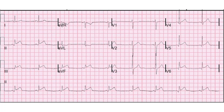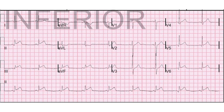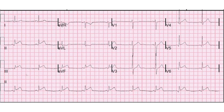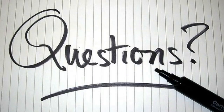An inferior STEMI. Leads two, three, and AVF — you can see the elevation. You can see some reciprocal depression in AVL, not as much in one, but we don't need it in both — we just need elevation in the inferior leads. Reciprocal depression is a confirmation, but if you had an inferior wall MI from a distal blockage of the left anterior descending, you wouldn't have reciprocal depression but it would still be a STEMI requiring a cath lab and an interventional cardiologist. If you have questions, you can put them in the comments or email me at shadetreecardiology.com.